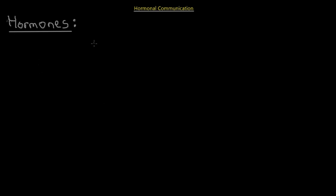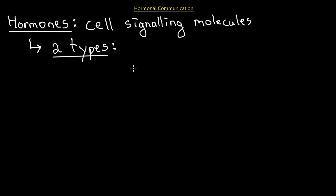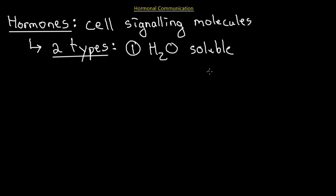Before moving on, I want to classify hormones into two types. Simply put, hormones are cell signaling molecules. Technically hormones can be divided into many types depending on structure — peptide or fat-based — but I'll divide them into two general types: water soluble and lipid soluble. These differ in how they affect cells and whether they enter the cell, determining how they function as signaling molecules. First, water-soluble hormones are typically peptide hormones, meaning they are made up of protein.